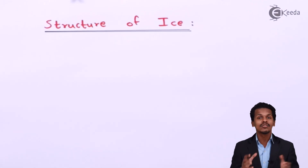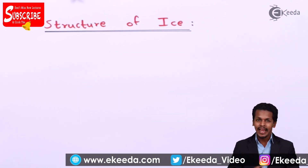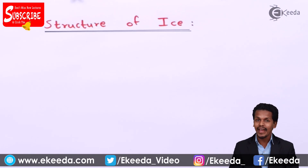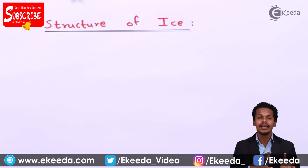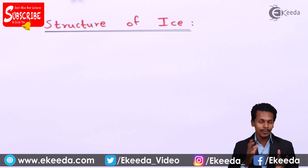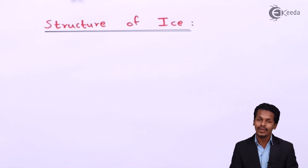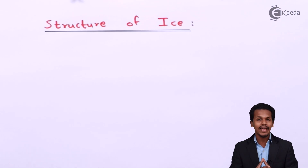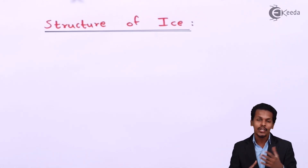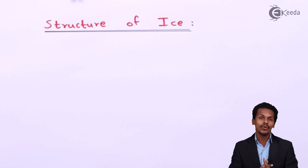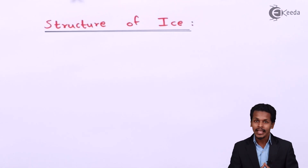So friends, we know that ice is basically a solid form of liquid water, and that's the reason that ice is crystalline in nature. Talking about the various structures of ice: at atmospheric pressure it has been found that the crystalline form of water is hexagonal, while at very low temperature the structure of ice is in cubic form.